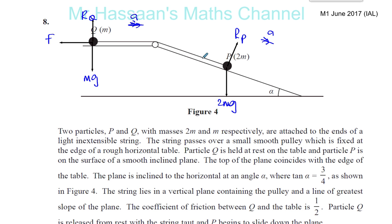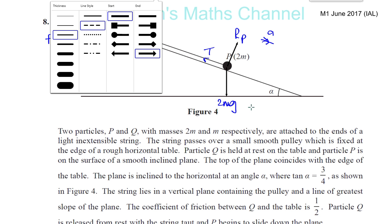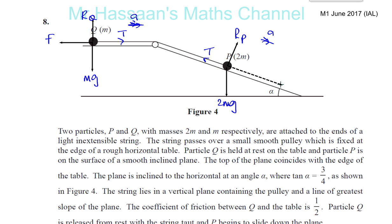We have the tension in the string, which will be the same in both parts since it's one light inextensible string - the tension is the same all the way through. We need to look at the forces in the direction of motion, resolving forces parallel and perpendicular to the plane. The weight here will have a component parallel to the plane and a component perpendicular to the plane.